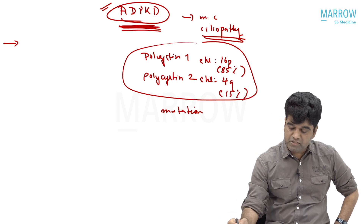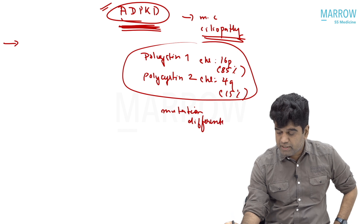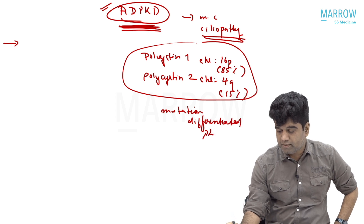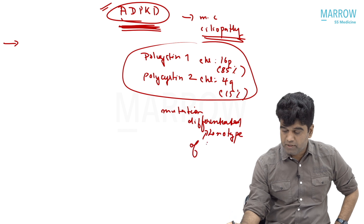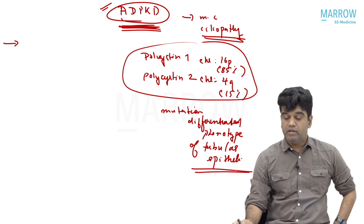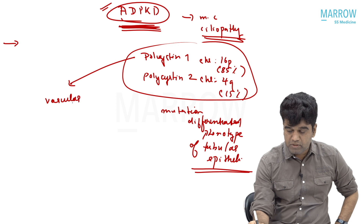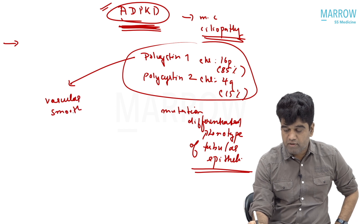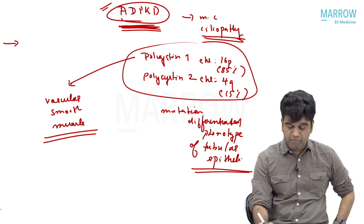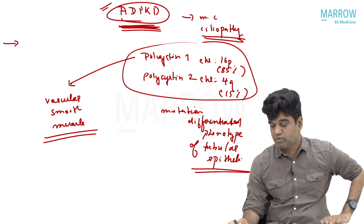The function of polycystin is to maintain the differentiated phenotype of the tubular epithelium. That is one very important point. The same polycystin is also present on the vascular smooth muscle. So its function is to maintain the differentiated phenotype of the tubular epithelium, and it is also present on the vascular smooth muscle.